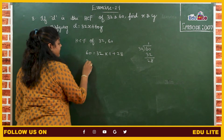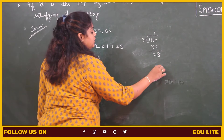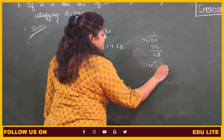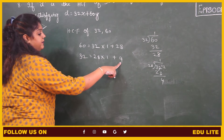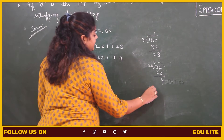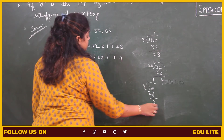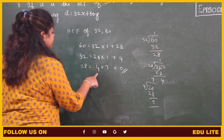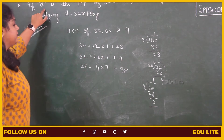The remainder is not 0, therefore we have to proceed. The dividend is 32 and the divisor is 28. 32 when it is divided by 28: 1 times 28, remainder 4. So 28 into 1 plus 4. Then 28 divided by 4: 7 times, so 4 into 7 plus 0. Therefore the remainder is 0 and 4 is the HCF of 32 and 60. So D value according to the given question is 4.